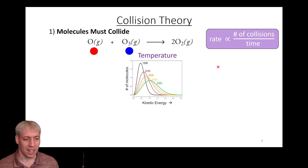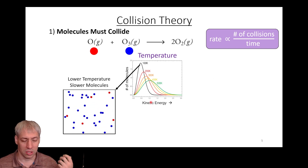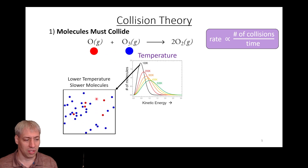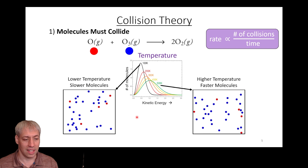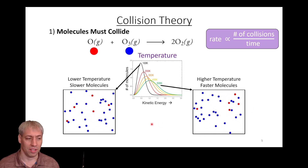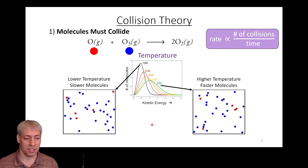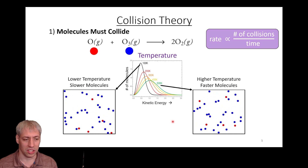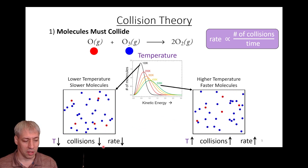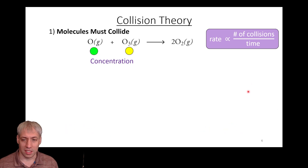Because molecules must collide, the rate depends on temperature. Looking at the kinetic energy versus number of molecules histogram, low-temperature molecules move slower than at higher temperatures. At lower temperatures, molecules collide less; at higher temperatures, molecules move faster on average and collisions are more prevalent. This rate-collision relationship automatically tells us there's a temperature dependence: higher temperature means faster movement, more collisions, and a higher rate.